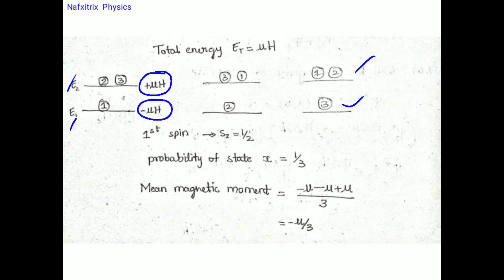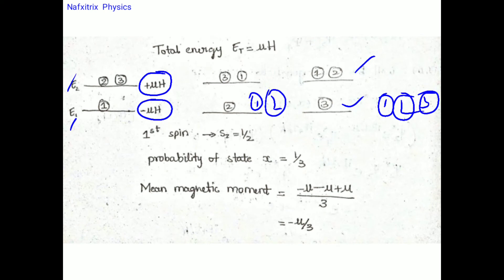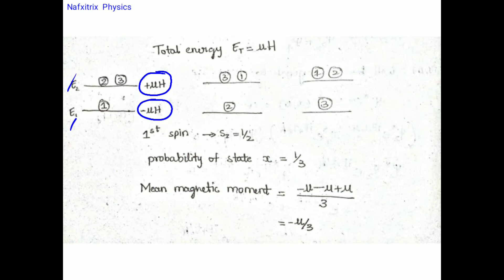We cannot place all three particles in E1, because the total energy would be −3μH, not +μH. Similarly, placing two particles in E1 and one in E2 gives −2μH + μH = −μH, which also doesn't satisfy the condition. So these configurations are eliminated.